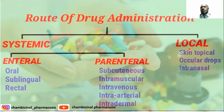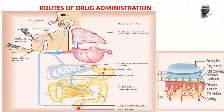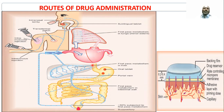We also have the local route of drug administration, such as skin application, ocular drops, and intranasal drops, when your target is to obtain a local effect. As you can see from the diagram, this shows the different routes of drug administration and the passage where the drug will pass.